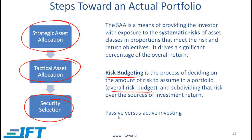Passive investing versus active investing are important terms even at Level 1. Passive investing means simply investing in the market — for example, by investing in a fund based on the S&P 500 index — without trying to identify overvalued or undervalued stocks. Active investing means actively looking for undervalued stocks, which involves more research and work.